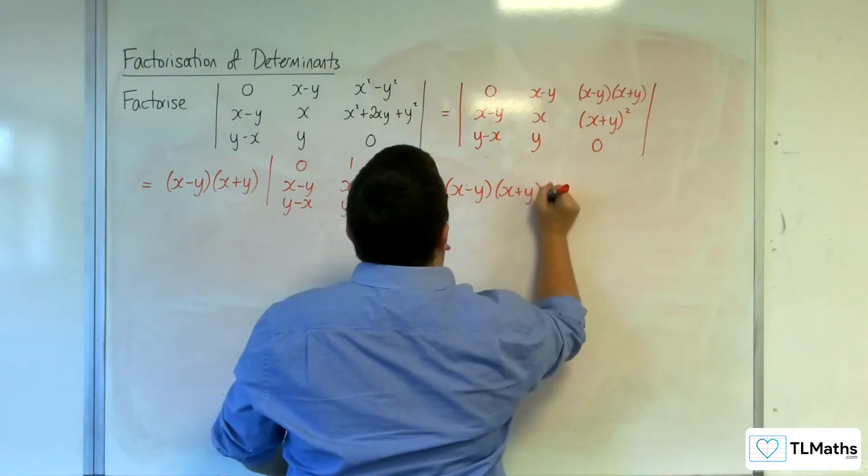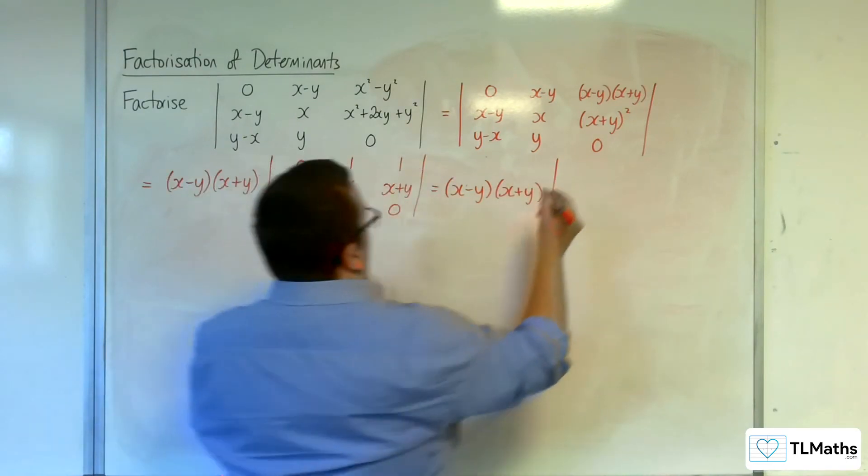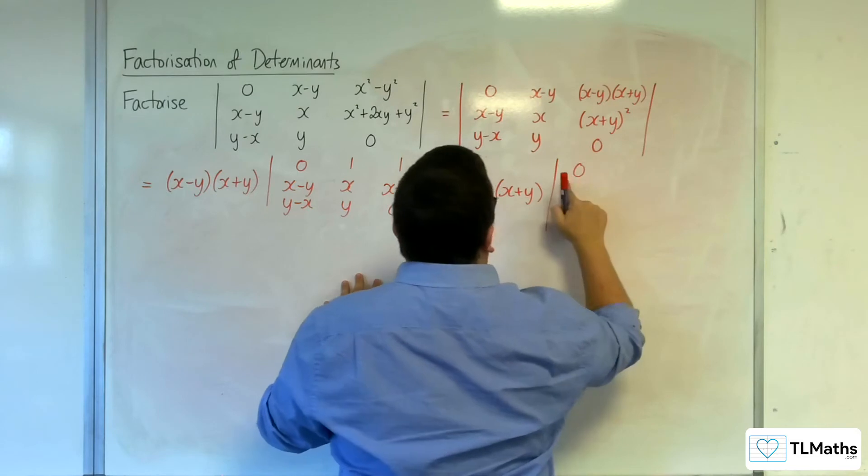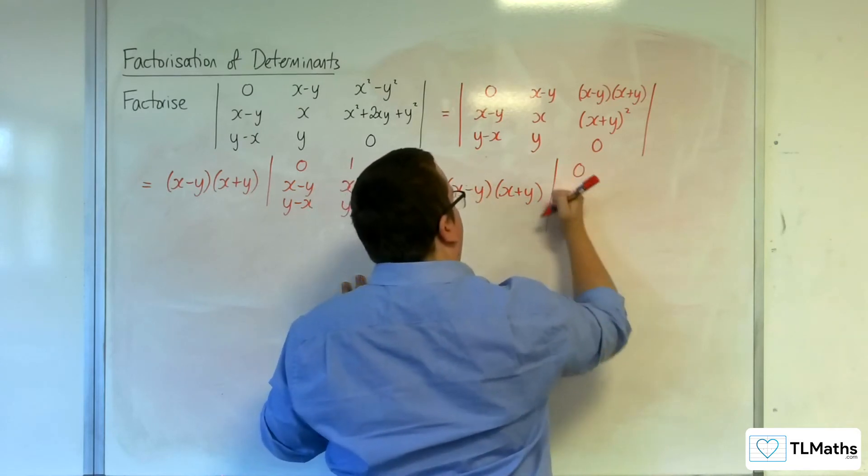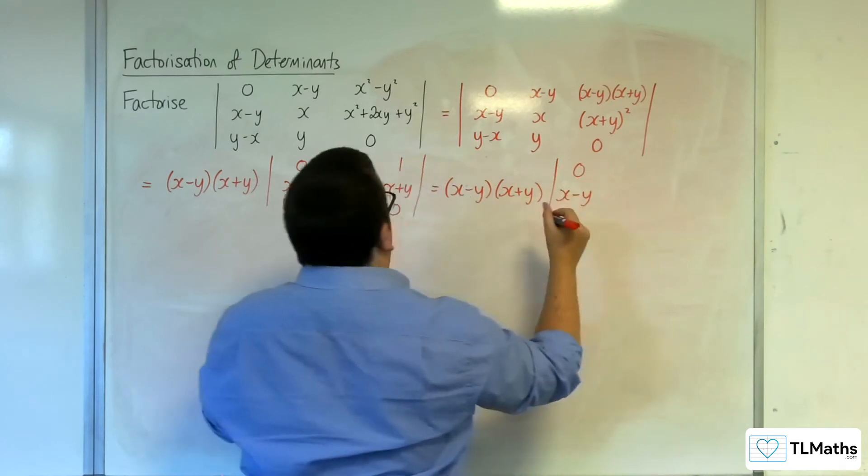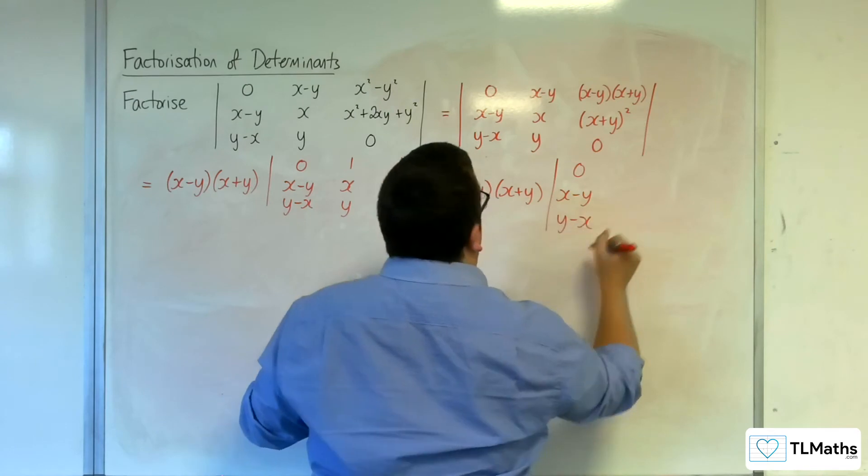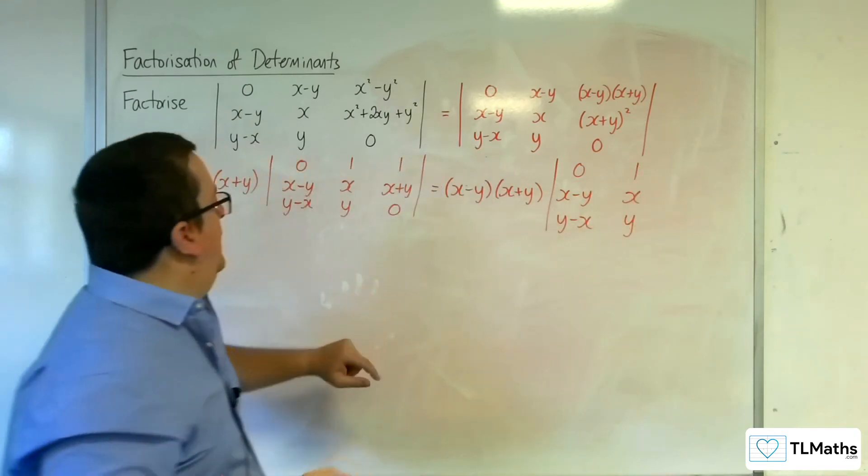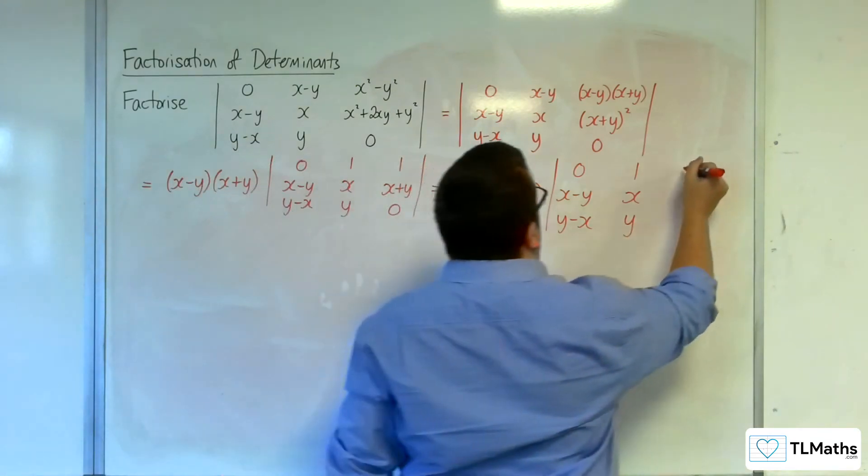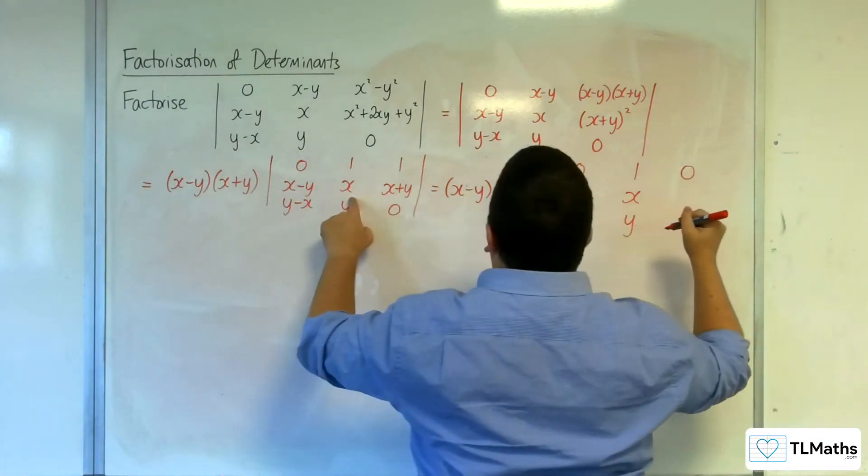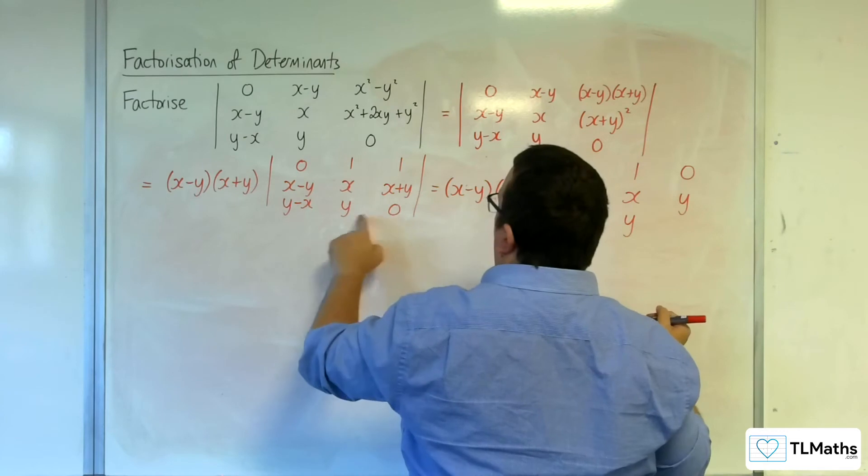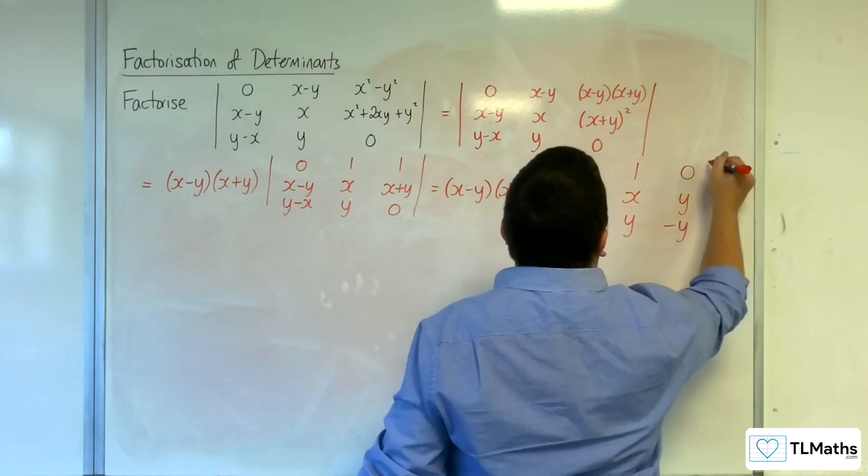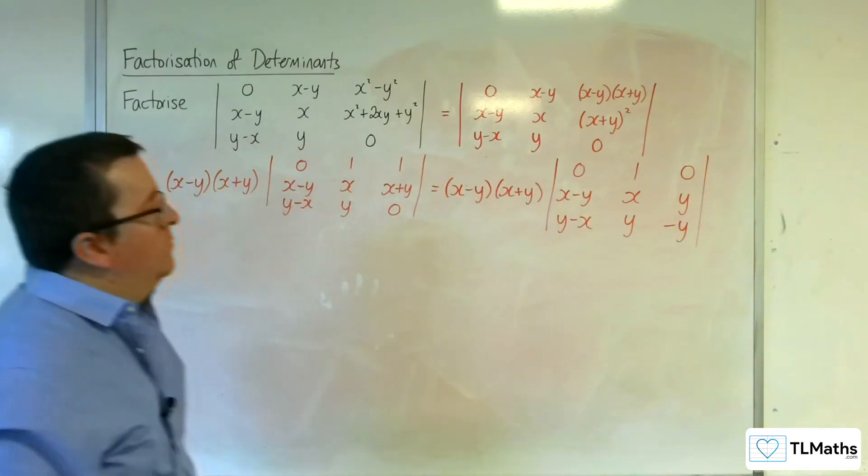And we'll have 0, x take away y, and y take away x. Now, the middle column is not going to change. And I'm going to have 1 take away 1, so 0. (x+y) take away x, so just y. And then 0 take away y, so minus y.